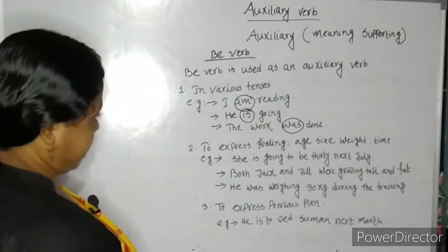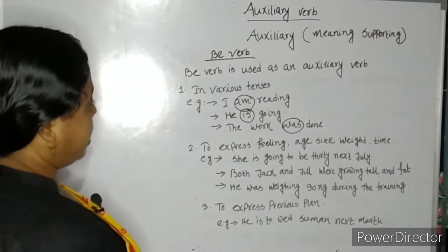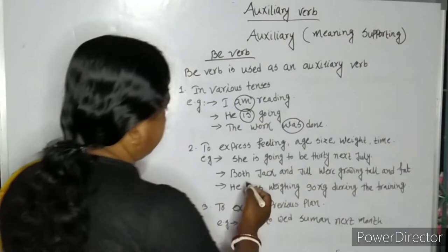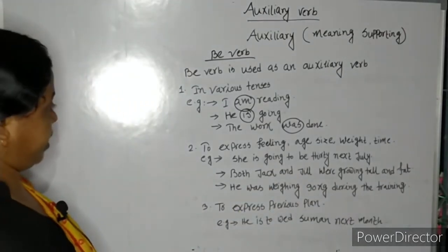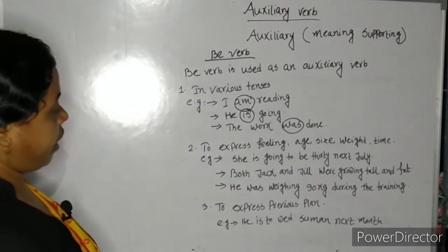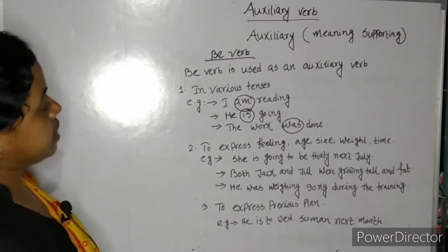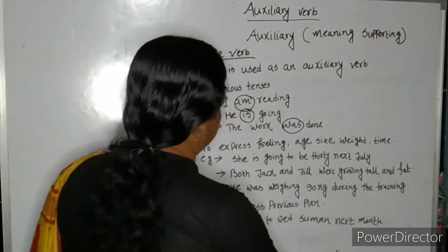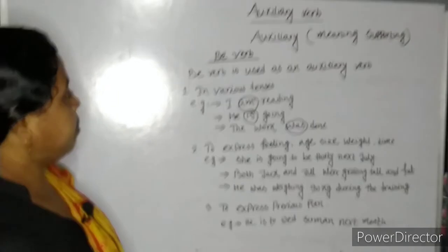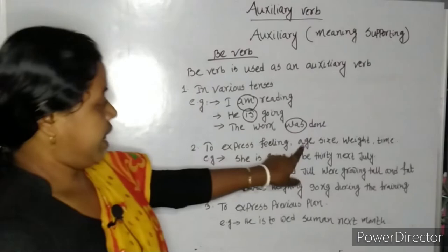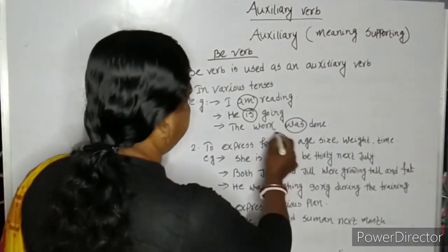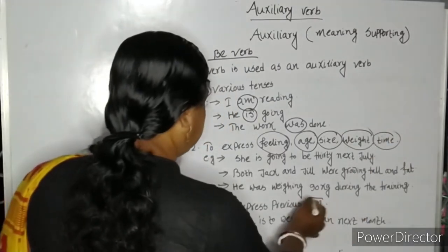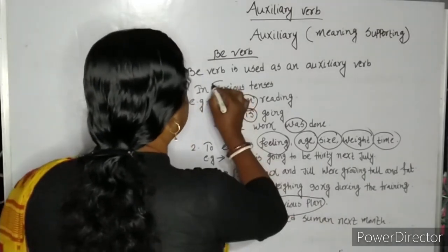Be verb is used to express feeling, age, size, weight, time. For example: 'She is going to be 30 next July' expresses age. 'Both Jack and Jill are growing tall and fat' expresses size. 'He was weighing 90 kg during the training' expresses weight. Be verb is also used to express a previous plan: 'He is to visit next month.' So be verb is used as an auxiliary verb in forming various tenses and to express feeling, age, size, weight, time, and previous plan.